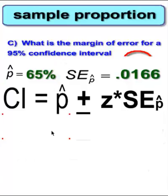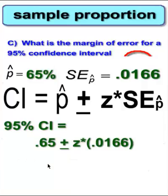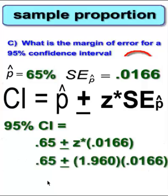We know p̂ is 0.65. So to find a 95% CI, we know p̂ is 0.65, plus or minus the z-star times the standard error of p̂. We found that out in an earlier problem. We're just going to plug in the numbers.